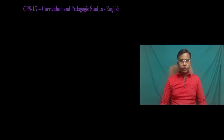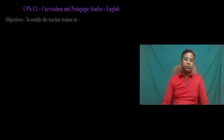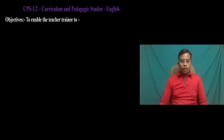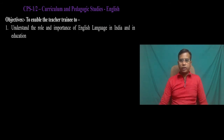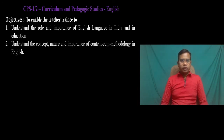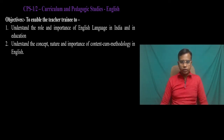Before going to see the syllabus, we will learn the objectives of this syllabus. The first objective is to enable the teacher trainee to understand the role and importance of English language in India and in education. The second objective is to understand the concept, nature, and importance of Content Come Methodology in English — we will learn CCM and understand its concept, nature, and importance in this paper.